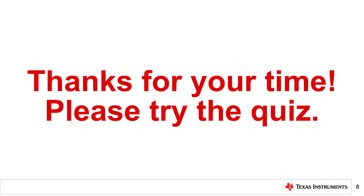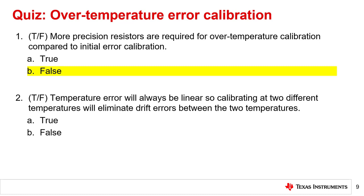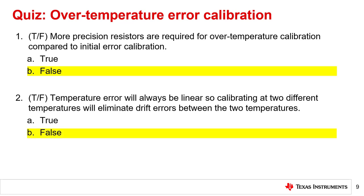That concludes this video. Thank you for watching. Please try the quiz to check your understanding of this video's content. Question 1: True or False? More precision resistors are required for over-temperature calibration compared to initial error calibration. The correct answer is B, false. For a given RTD type and measurement range, only two precision resistors are required for either initial error or over-temperature error calibration. Question 2: True or False? Temperature error will always be linear, so calibrating at two different temperatures will eliminate drift errors between the two temperatures. The correct answer is B, false. Temperature error can be non-linear such that calibration can reduce error between two calibration points, but not necessarily eliminate it.